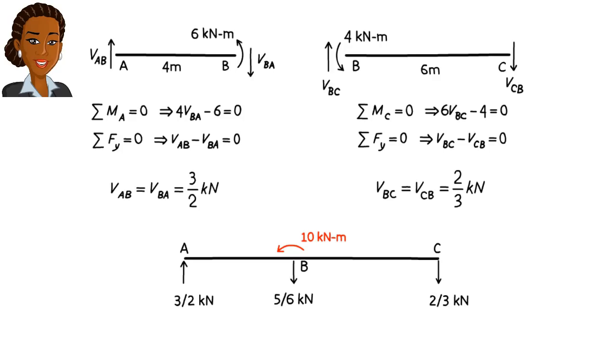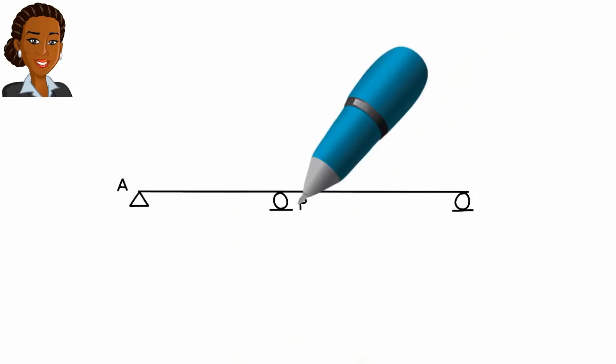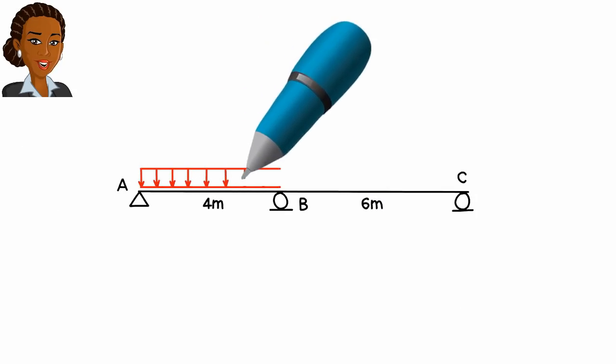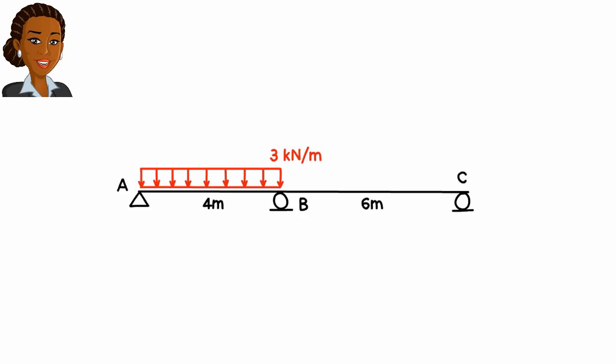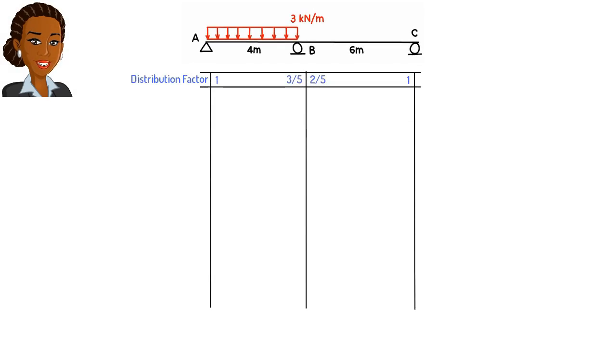Next, let's consider the case where the beam is subjected to a member load. Here is a uniformly distributed load applied to segment AB. How does that change the iterative process of calculating member end moments? It does not change the process at all. The only change that we need to make is to the initial moment distribution table. We are going to add a row to the table for fixed end moments associated with the distributed load.